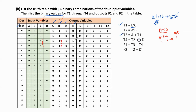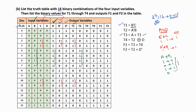Whenever both c and b' are 1, the output t1 is 1; otherwise 0. Similarly find t2 values: when both inputs a' and b are 1, the output is 1. For t3 = a + t1 (OR operation), when both inputs are 0 the output is 0; otherwise the output is 1.